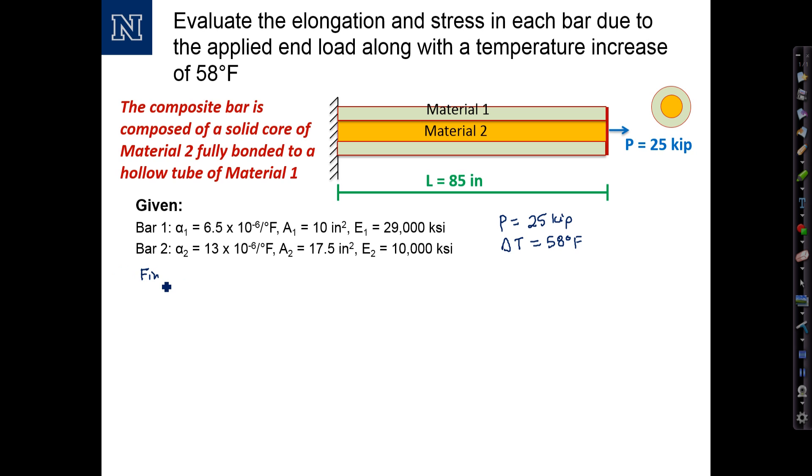So we're asked to find, for this problem, the stress in each bar. I'm going to call those stresses sigma 1 and sigma 2 for material 1 and material 2. Since we're working in English units, I want to find those stresses in KSI, or kips per square inch. We're also asked to evaluate the elongation in each bar, which I'm going to call delta 1 and delta 2. And I want to evaluate those in inches.